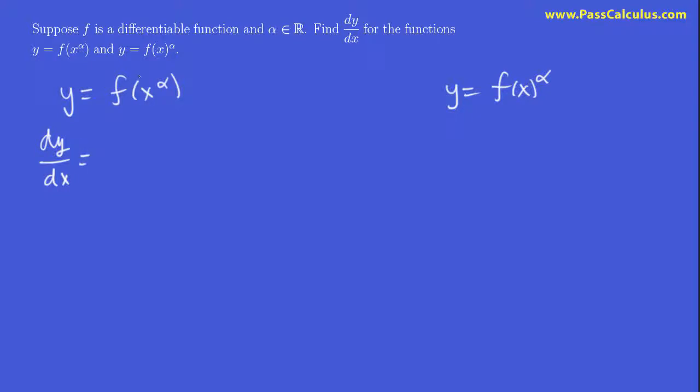Well, on this function, the outermost function is the f, right? And then this x to the alpha is the inner function. So it's going to be f prime of the inner function times the derivative of the inner function. That's just chain rule, right? And then I fill those in.